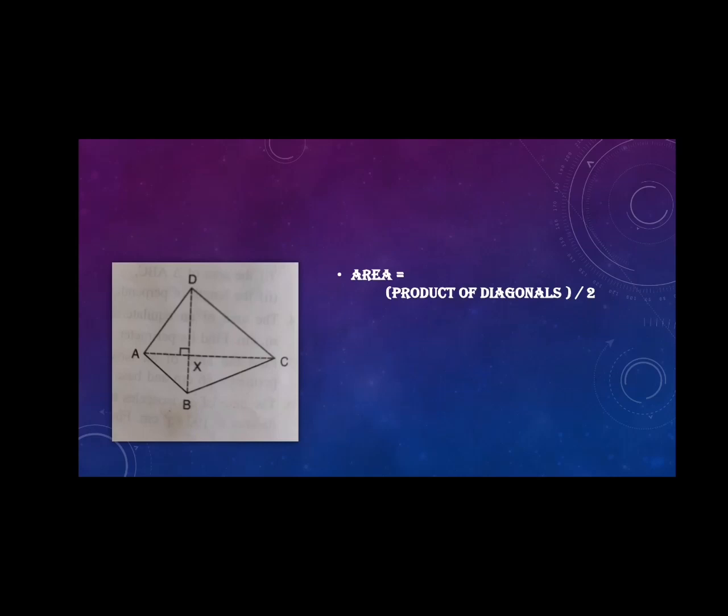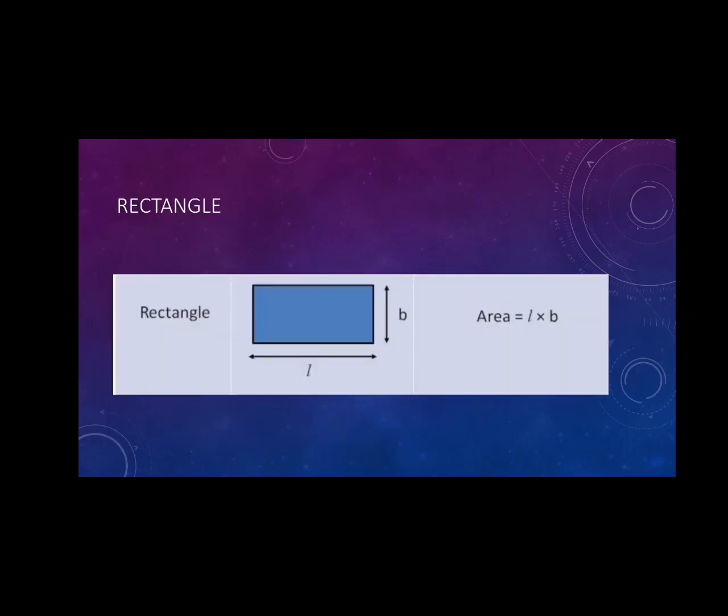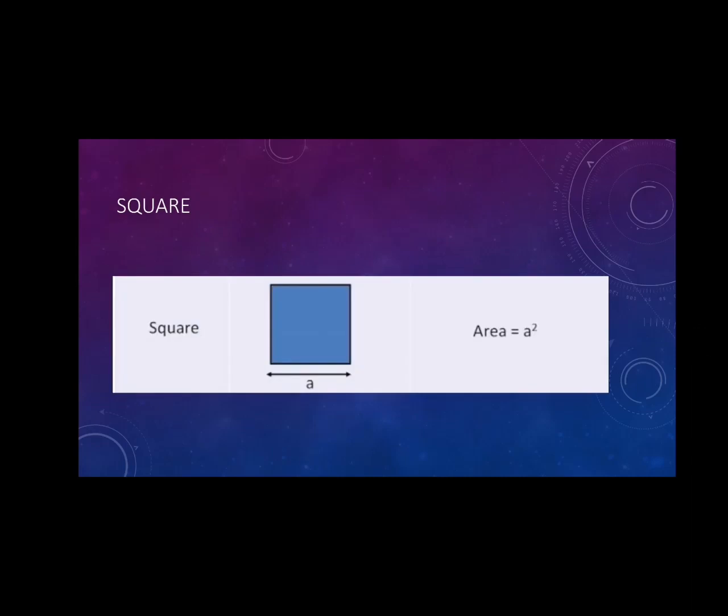Next is rectangle. Area is length into breadth. Perimeter is 2 into L plus B. And the diagonal is square root of L square plus B square. Next is square. Perimeter is 4 into A because A is a side. And the area is side square. And diagonal is A into root of 2.